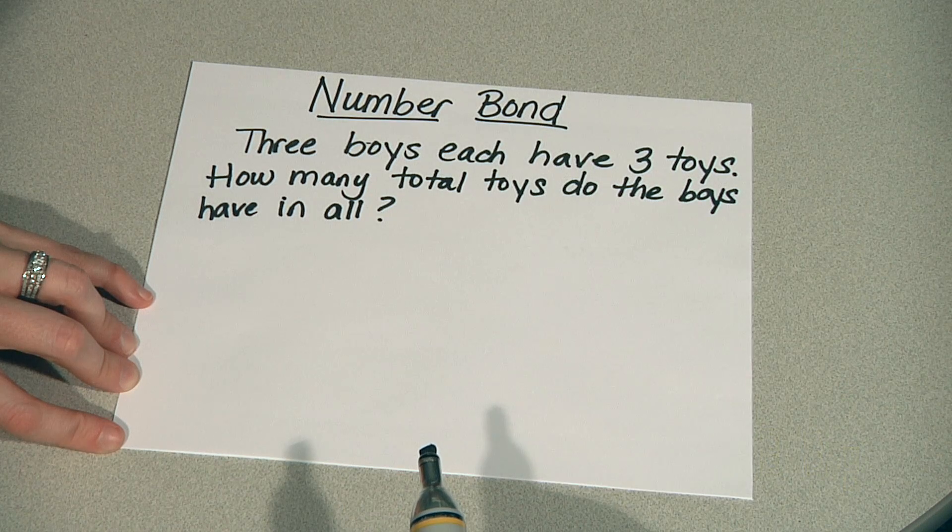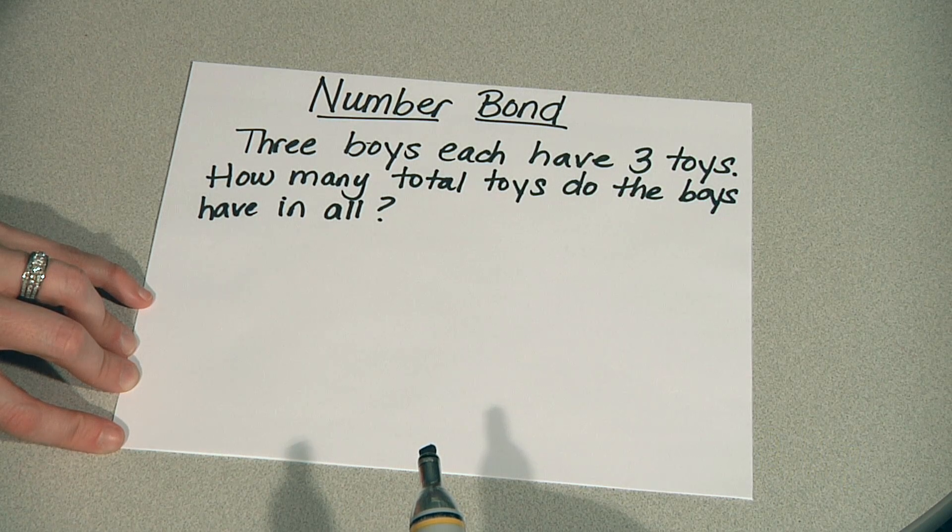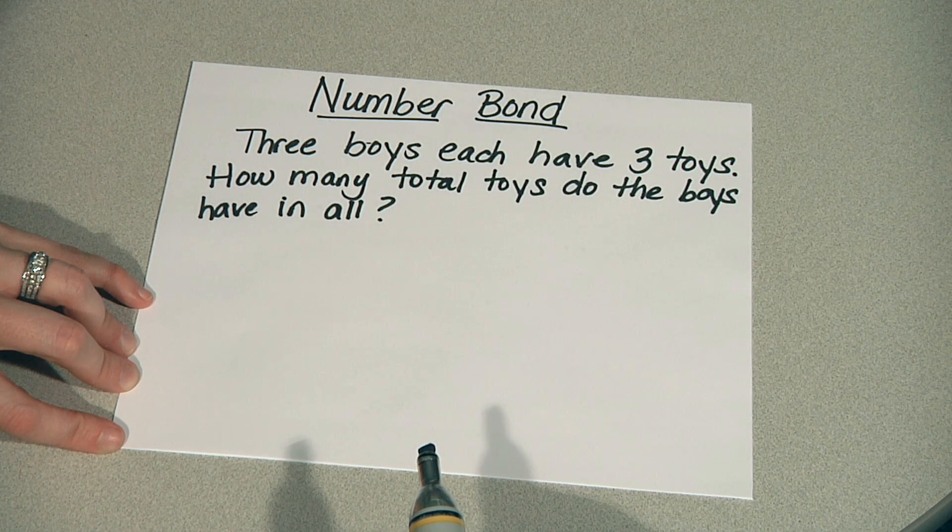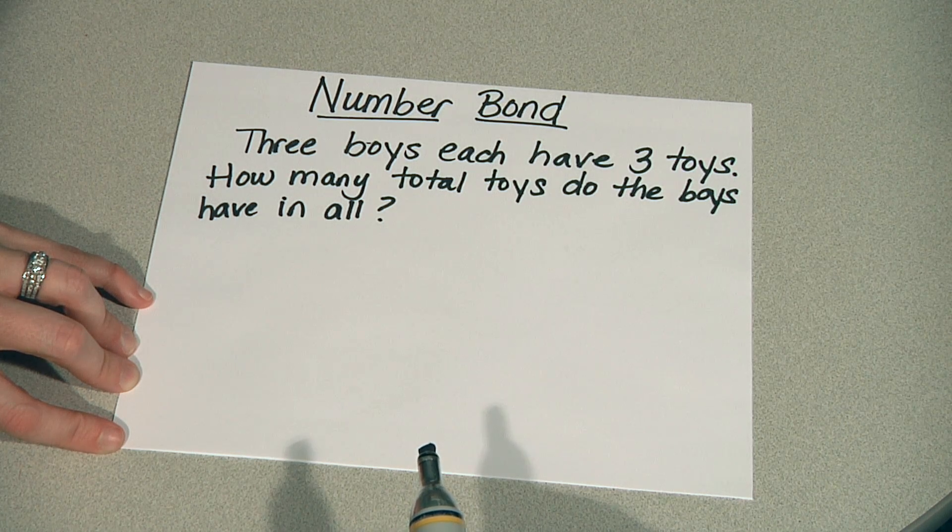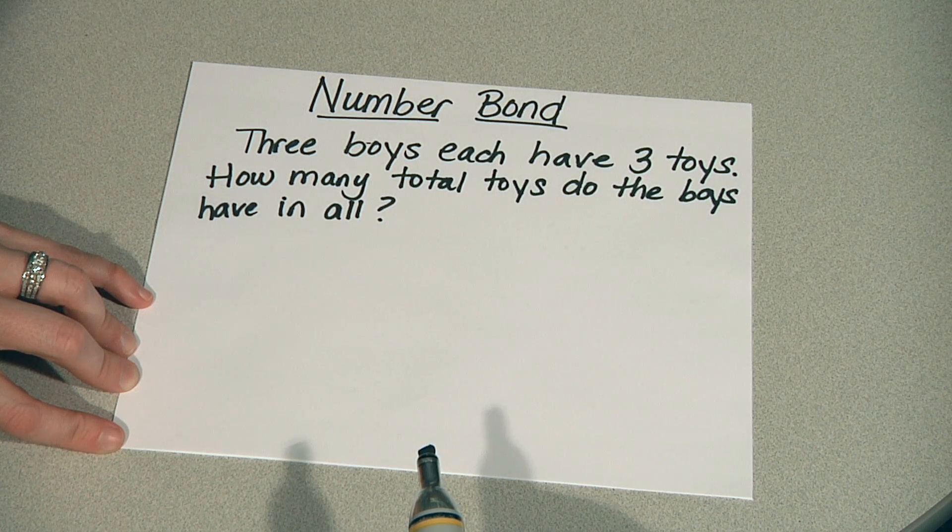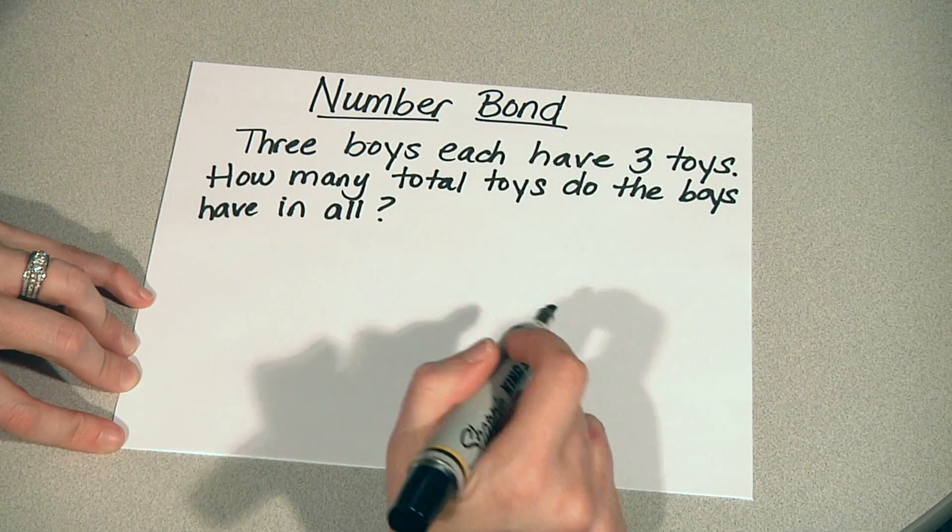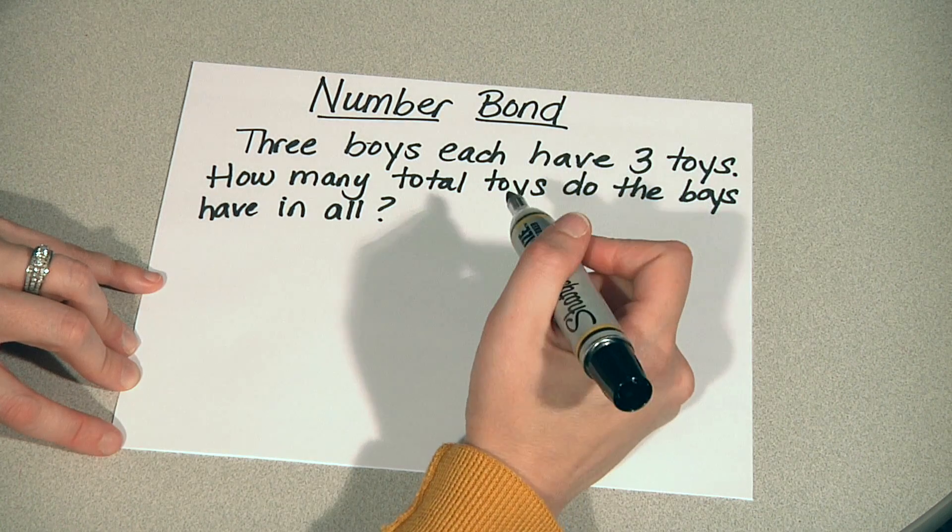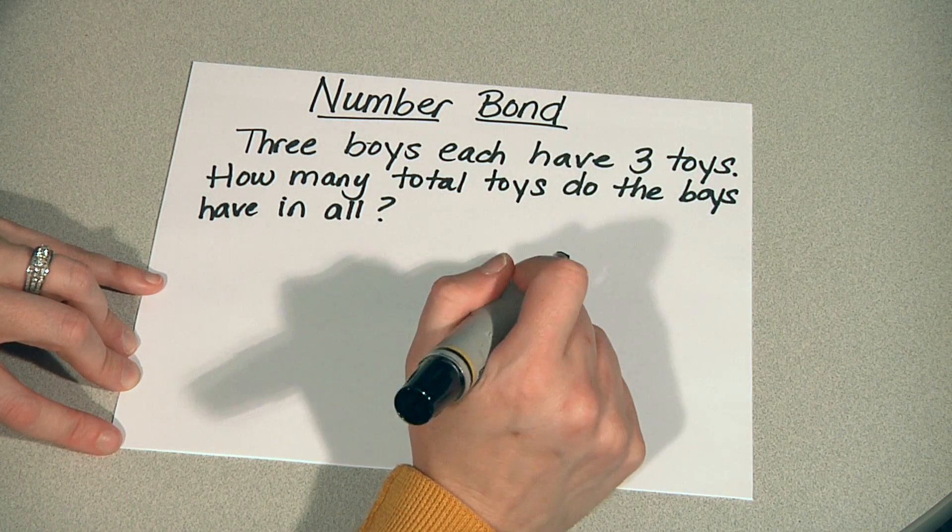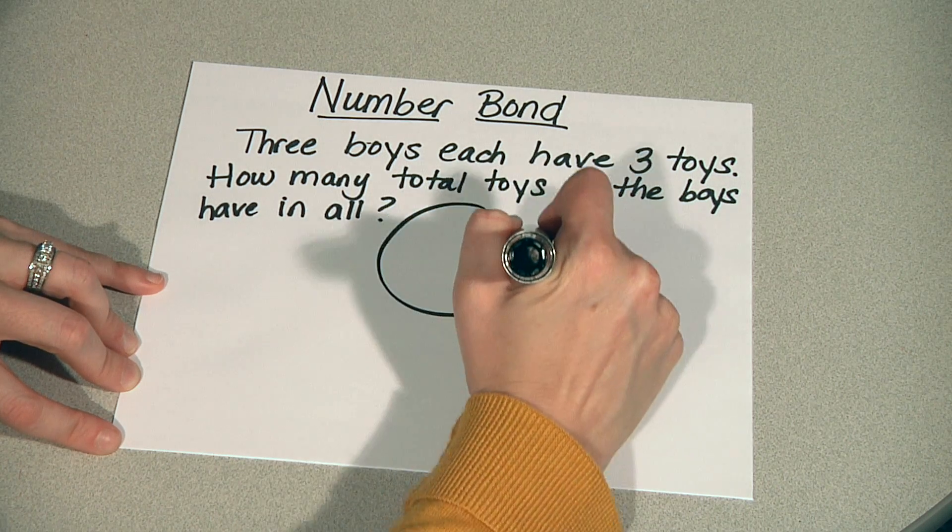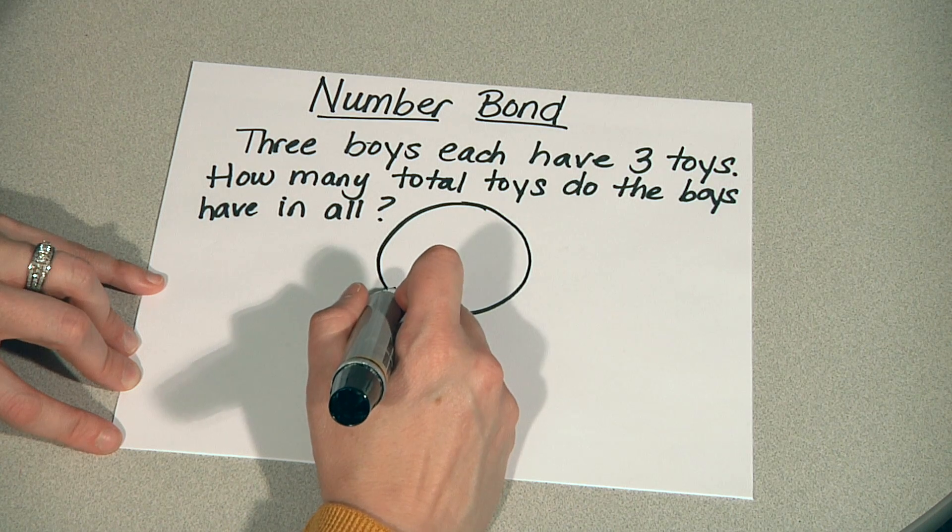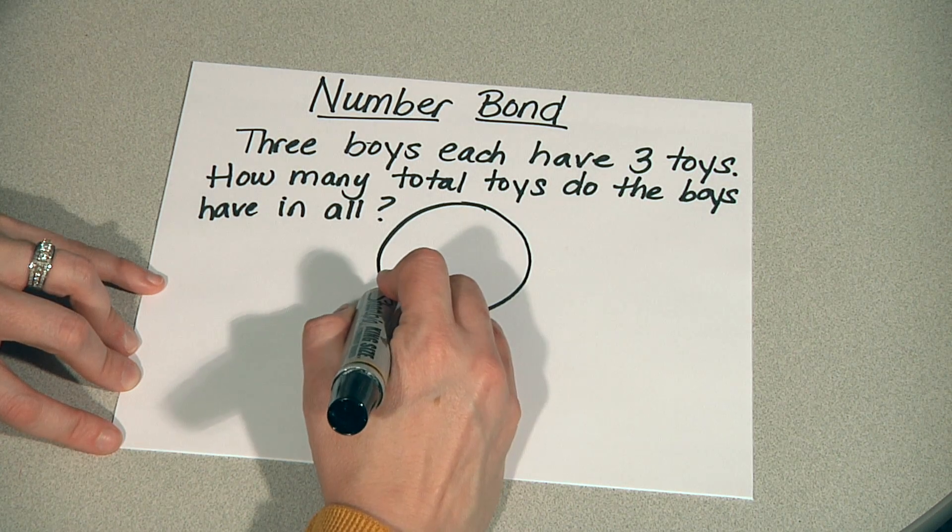Let's talk about an example of when we would use a number bond in grade three. Here we have an application or real world problem. Three boys each have three toys. How many total toys do the boys have in all? In this case, we're trying to define the whole. We would represent that as the largest circle in our problem. And the information that the problem's giving us is about the three parts.